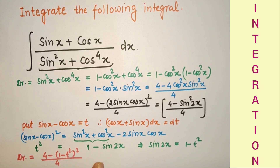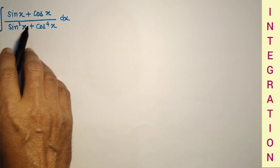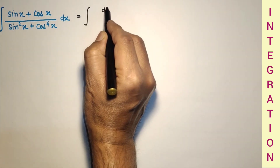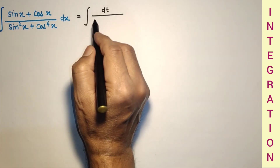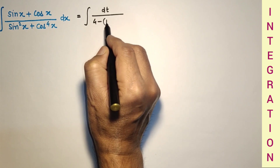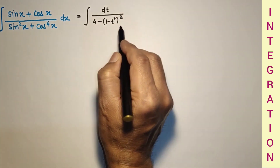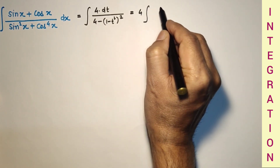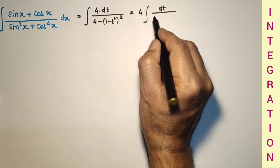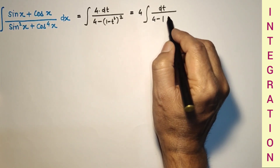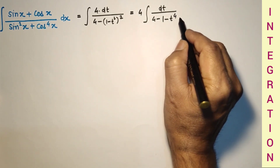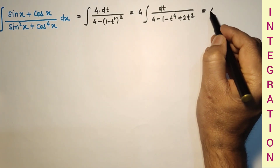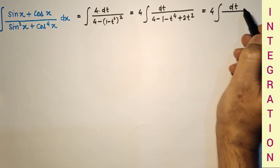Continuing: since sin x − cos x = t, we have (sin x + cos x) dx = dt, and the denominator is (4 − (1 − t²)²) / 4. The 4 moves to the numerator, so we get 4∫dt / (4 − (1 − 2t² + t⁴)), which simplifies to 4∫dt / (3 + 2t² − t⁴).